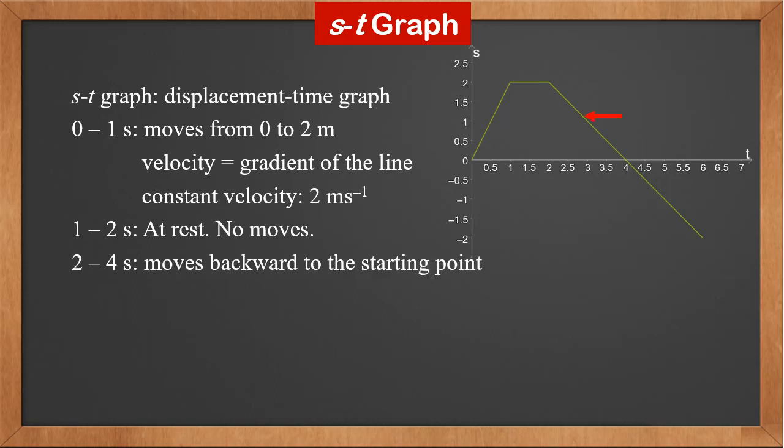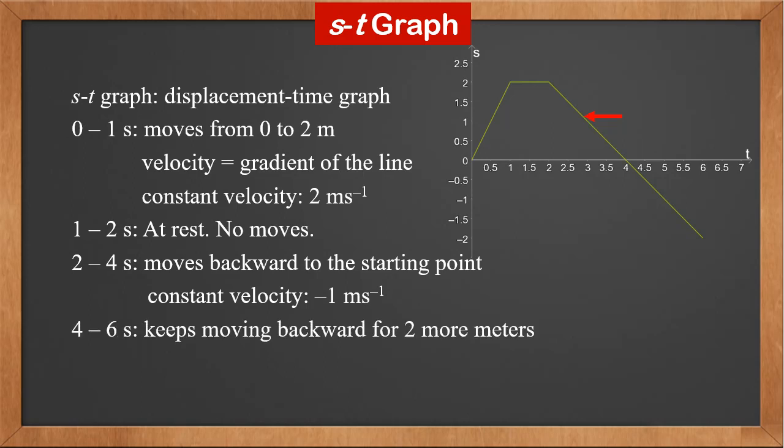From 2 to 6 seconds, the object moves backward and the displacement decreases at a constant rate. At the 4th second, the object moves back to the starting point. The velocity is minus 1 meter per second. From 4 to 6 seconds, it keeps moving backward for 2 more meters, also at minus 1 meter per second.